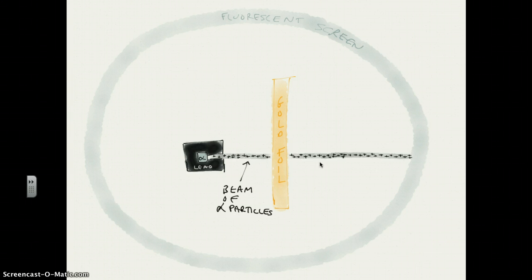As we reviewed again today in class, Rutherford's gold foil experiment shot this beam of alpha particles, positively charged particles at gold foil, and looked for where they ended up on this fluorescent screen surrounding this arena. Most of those particles ended up going straight through, but every once in a while they got bounced off.